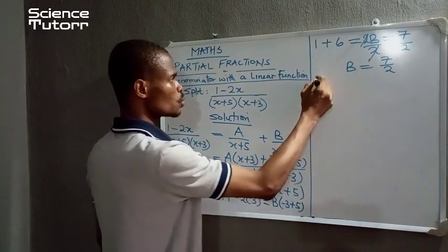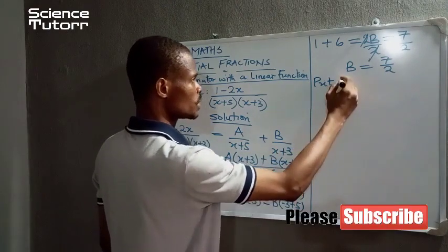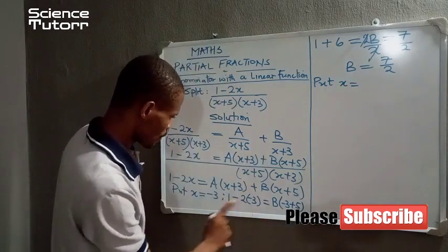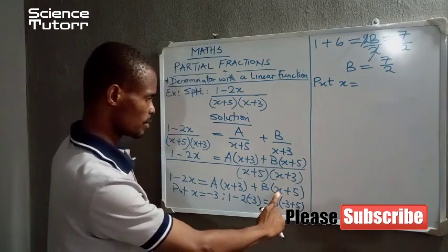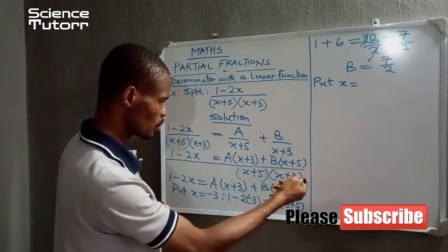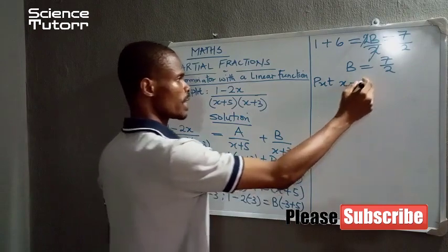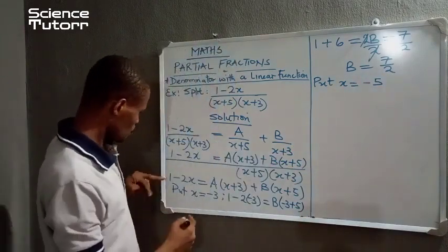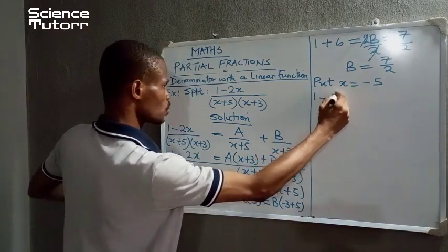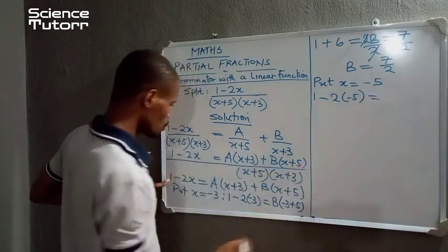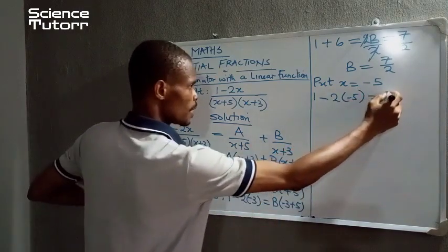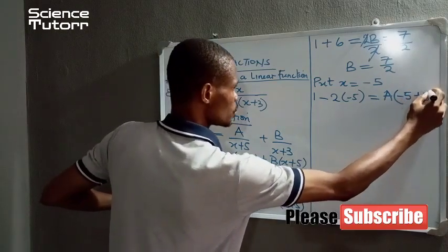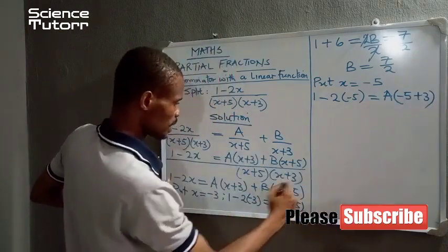On the other note, to find A, we have to terminate B. So we say put x to be equal to minus 5, so that minus 5 plus 5 gives us 0. So that terminates B. So put x to be minus 5. So from here, we have 1 minus 2 into minus 5 to be equal to A into (minus 5 plus 3). And this side becomes 0.